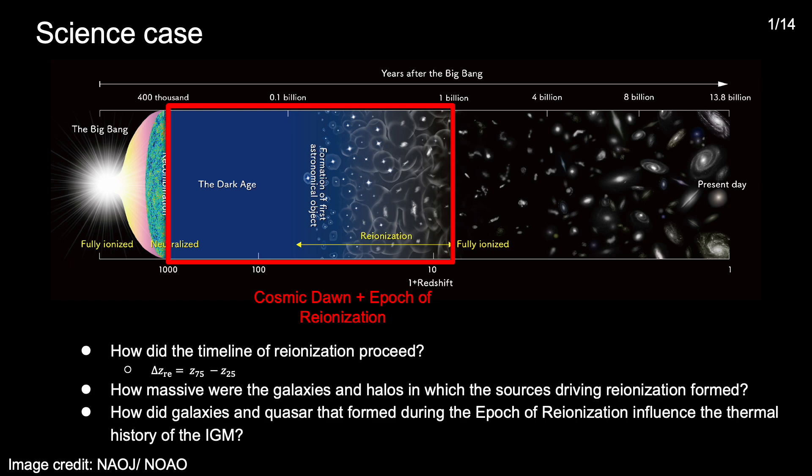During this period, the first stars and galaxies in the universe form and the emission of ultraviolet light by those sources culminates in a phase transition in the state of the hydrogen intergalactic medium. There are many outstanding questions of astrophysical and cosmological interest associated with this epoch, but three I'll focus on here are: how did the timeline of reionization proceed? Was it a gradual long duration process or did it happen more rapidly? And when I talk about the duration of reionization in this talk, the metric I'm using is the redshift interval between a mean hydrogen IGM neutral fraction of 75 and 25%.